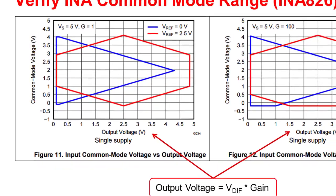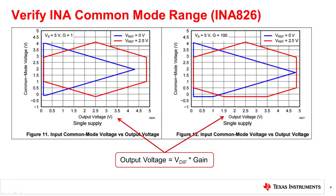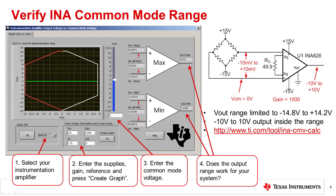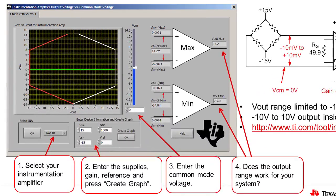On the next slide, we will introduce a software tool that generates this type of plot for any test condition. Here we show a calculator tool that allows you to confirm that the instrumentation amplifier will have a linear output swing for your configuration. First, select the amplifier. Second, enter the supplies, gain, and reference voltage and press the create graph button.